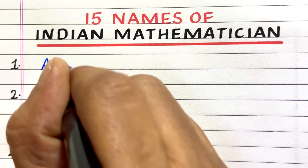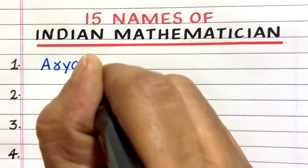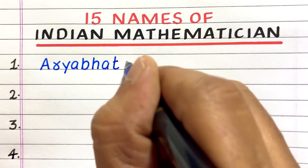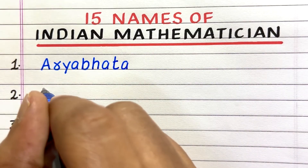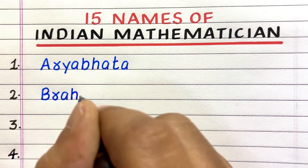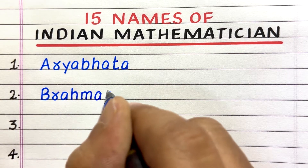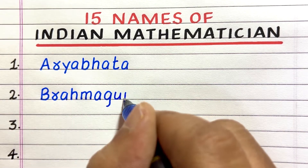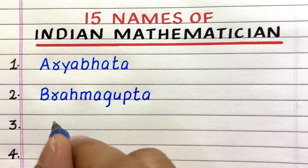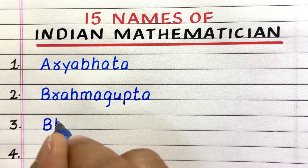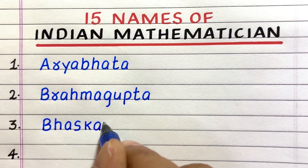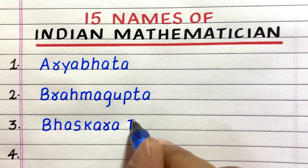The first famous Indian mathematician is Aryabhata. 2. Brahmagupta. 3. Bhaskaravan.